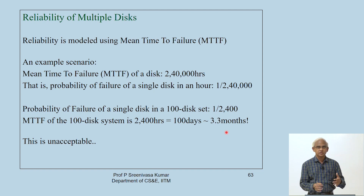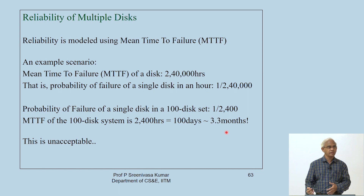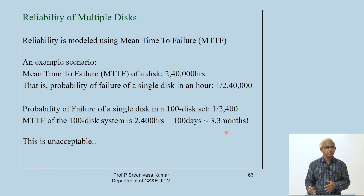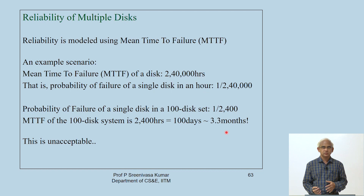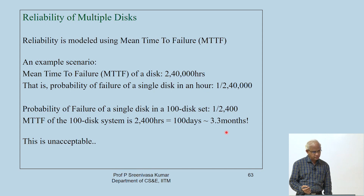If you take a typical mean time to failure figure of around 200,000 hours, the probability of a single disk failing in any given hour is roughly 1 over 240,000. But if this disk is part of a 100-disk set, the probability of any one of the 100 disks failing is 100 times higher — giving a mean time to failure of about 3 months for the whole set, which is really bad.